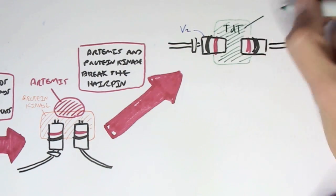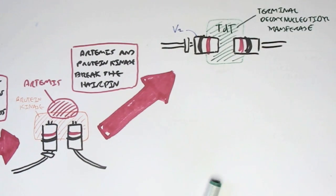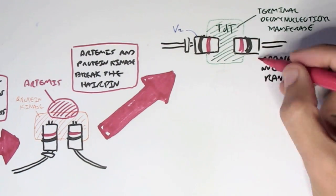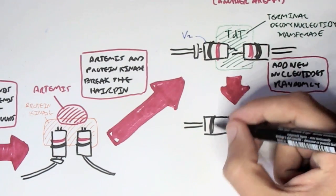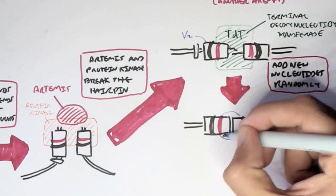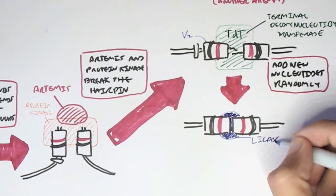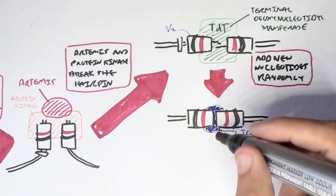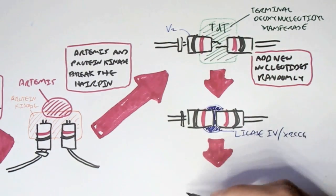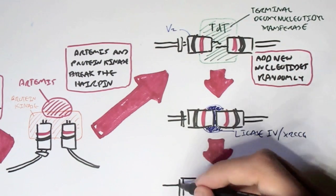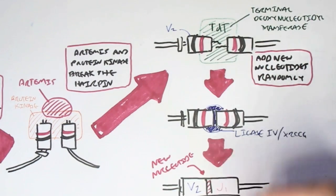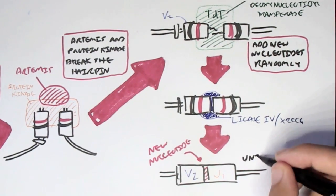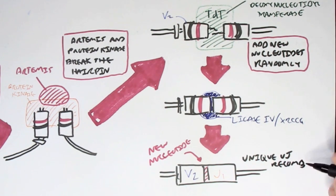A DNA protein kinase and Artemis open the hairpin loop formed by the Ku proteins. Following this, terminal deoxynucleotidyl transferase (TDT) adds new nucleotides randomly into the separated variable and joining segments. DNA ligase and another protein called XRCC4 then ligate the ends together, forming a repaired and unique V2-J1 recombinated segment.